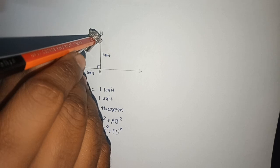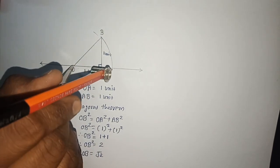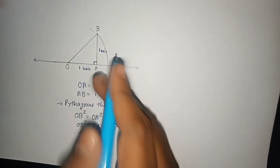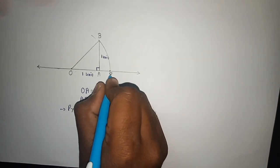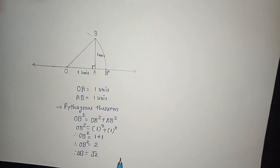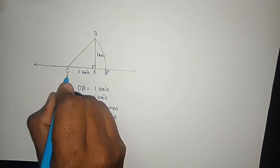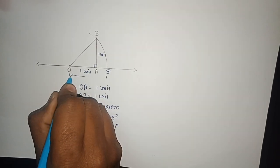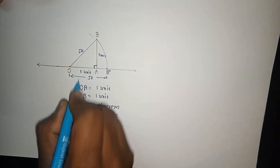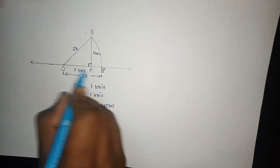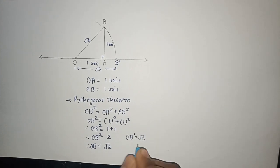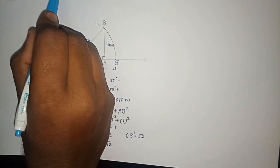So I will take this measure and draw the arc which intersects our original number line at a specific point. I will call this point B dash, because we have already used B here. So the distance from O to B dash will be equal to under root 2. So OB dash = root 2 — this is how you can represent root 2 on the number line. But we have to represent under root 3.